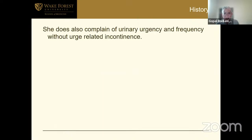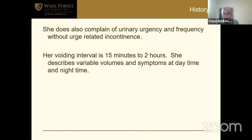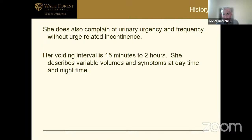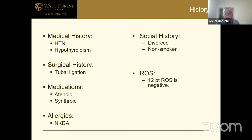She has urgency and frequency without urge-related incontinence. She avoids variably. No hematuria or malignancy. Normal bowel function, no fecal incontinence. These are two important questions — bowel function and fecal incontinence are important to ask in your patient presenting with prolapse and incontinence, because you need to address the rectal aspect at the same time. No point fixing just her bladder if she still has fecal incontinence.